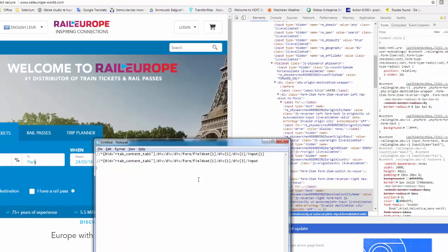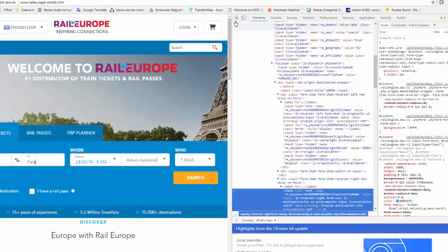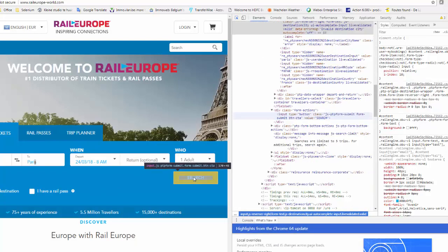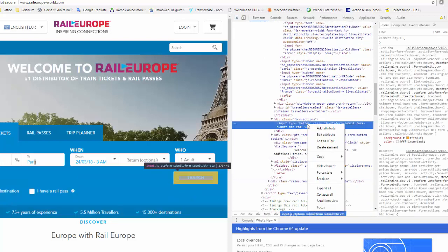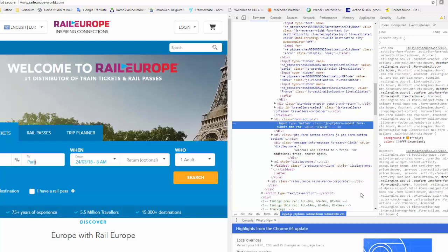After that you can inspect like this also. For search. Right click. Copy. XPath.